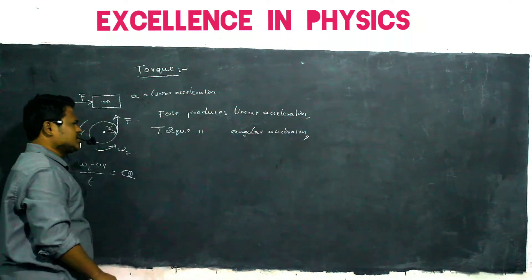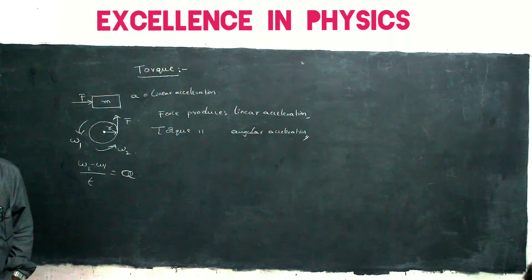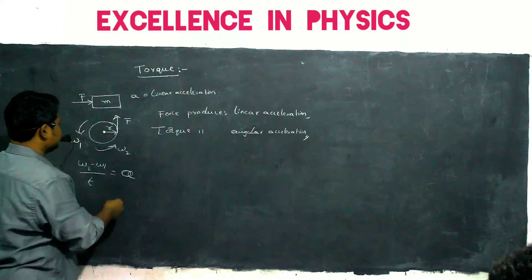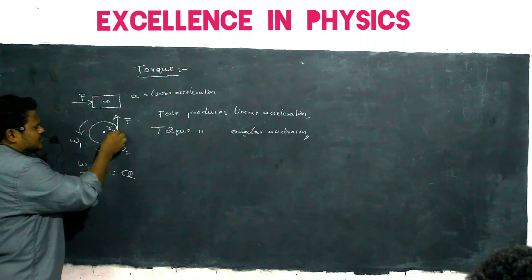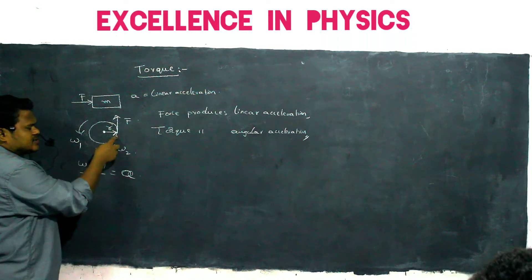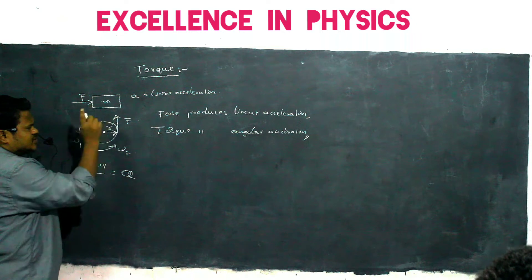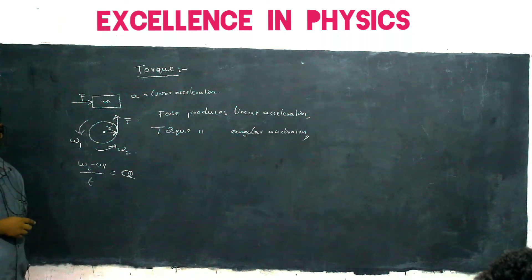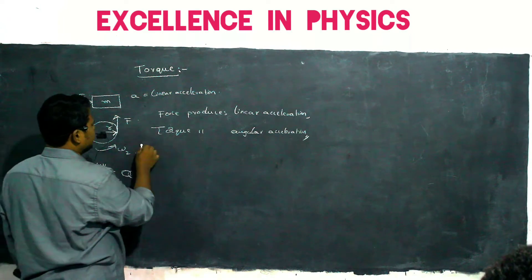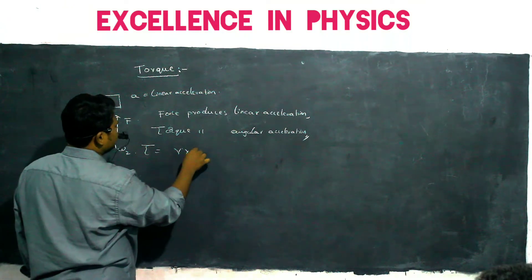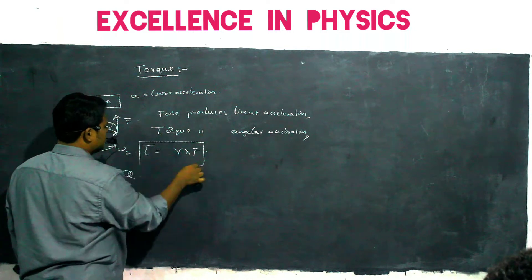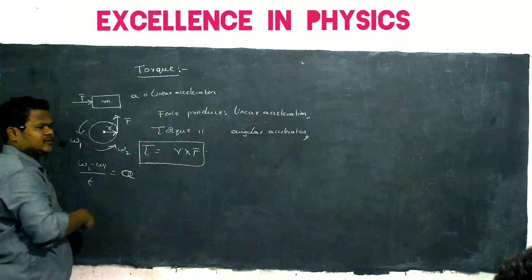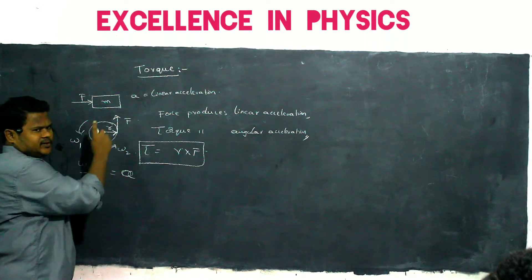This is what we call torque. In this condition, this is the radius vector where we are applying the force, and the force is applied at an angle of 90 degrees to the radius vector. So here, torque equals R into F. This is one formula for torque. Since they are perpendicular, I am directly writing R into F.